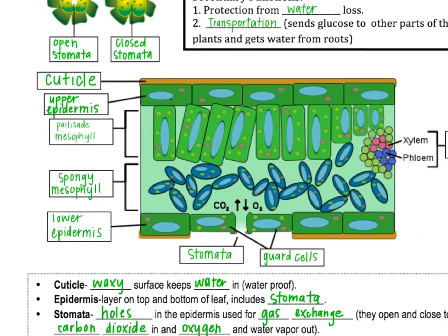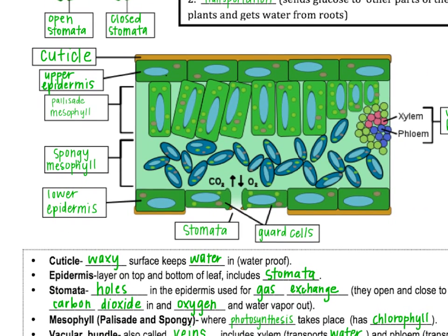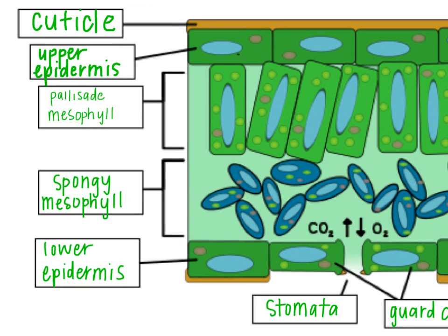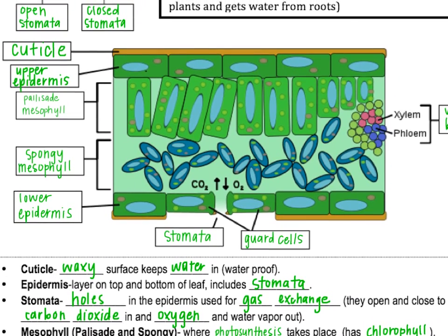In our diagram of a leaf, at the top we have the cuticle — the brown, waxy layer that prevents water loss. Just under that is a layer called the upper epidermis. Then the layer of cells that looks like columns is the palisade mesophyll, where most of the photosynthesis happens. Just below that is the spongy mesophyll, where some photosynthesis also occurs but not as much. Then the lower epidermis at the bottom, and at the very bottom there's a hole called the stomata, surrounded by guard cells.